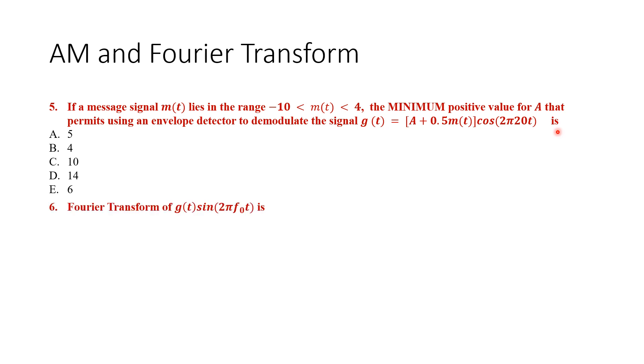For the sixth question: the Fourier transform of g(t)sin(2πf₀t) is given by which of the following? A, B, C, D, or E.